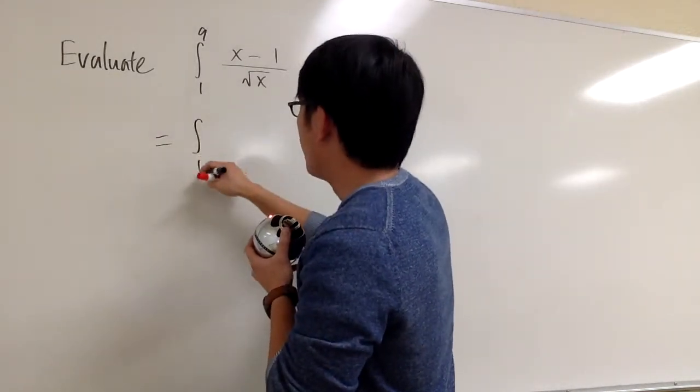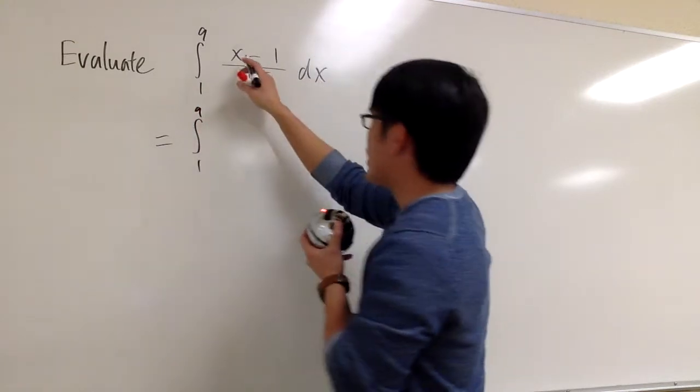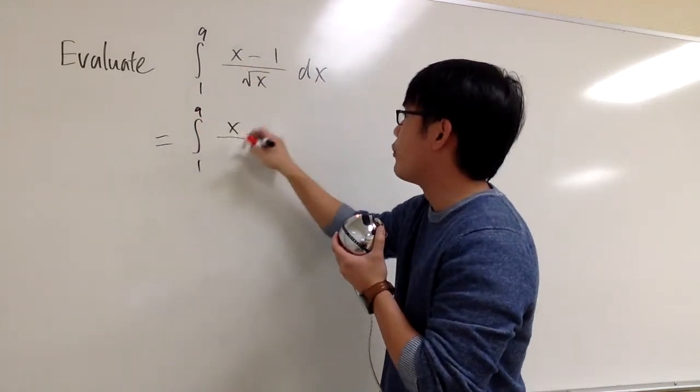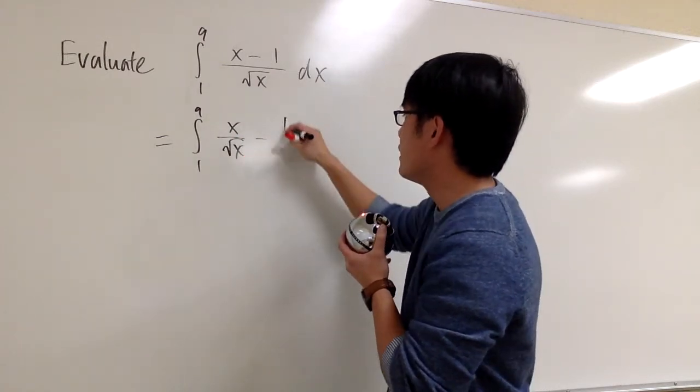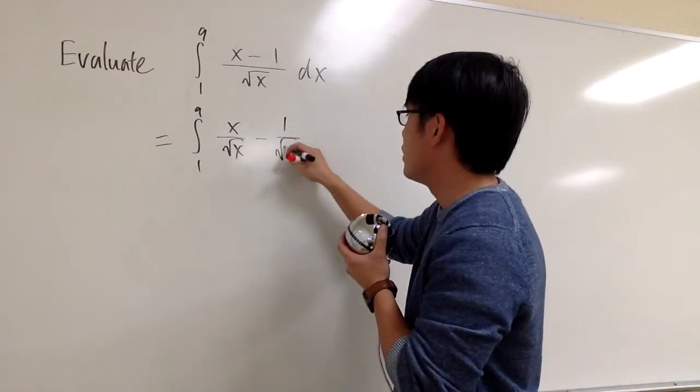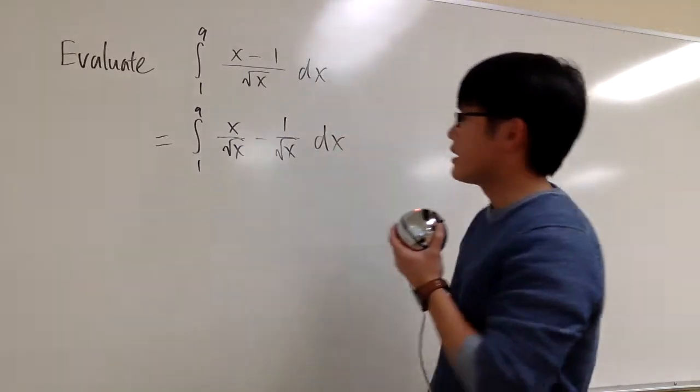And here we are going to have 1 to 9. Let me split the fraction as x over square root of x minus 1 over square root of x. I still have the dx on the side.